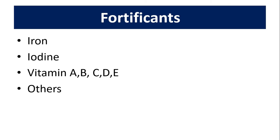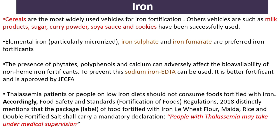Iron, iodine, vitamins A, B, C, D, E, and other compounds are used as fortifications. Cereals are the most widely used vehicles for iron fortification. Other vehicles such as milk products, sugar, curry powder, soy sauce, and cookies have also been successfully used. Elemental iron — particularly micronized iron sulfate and iron fumarate — are the preferred iron fortifications.